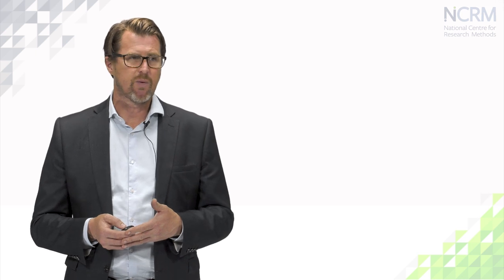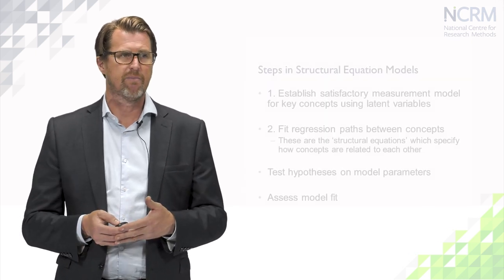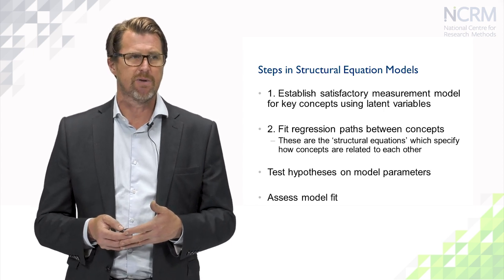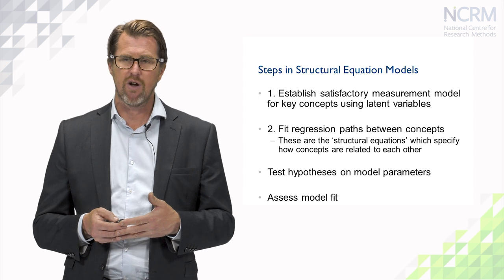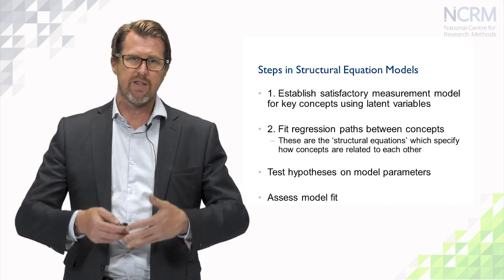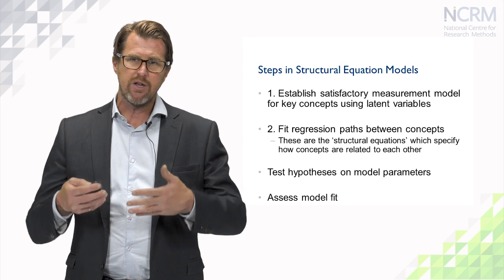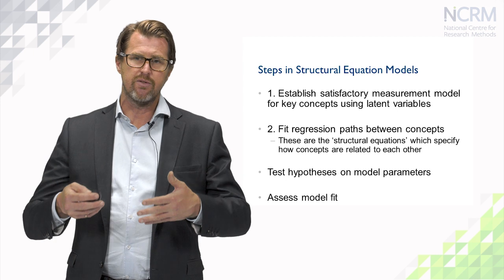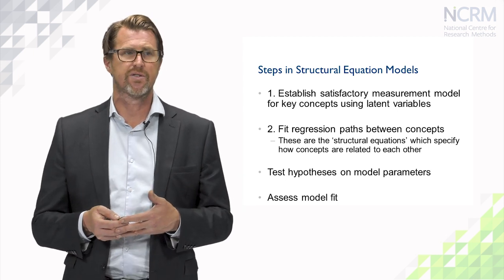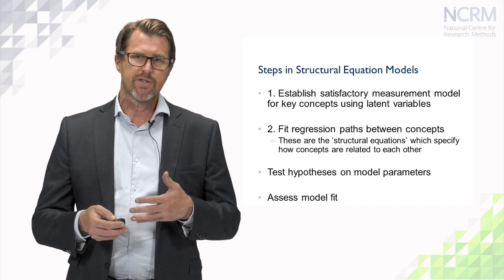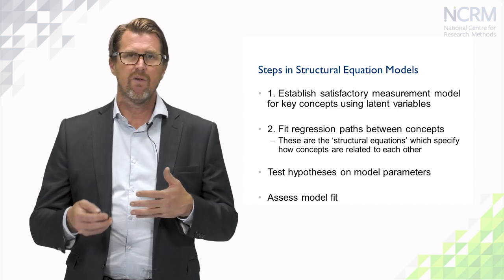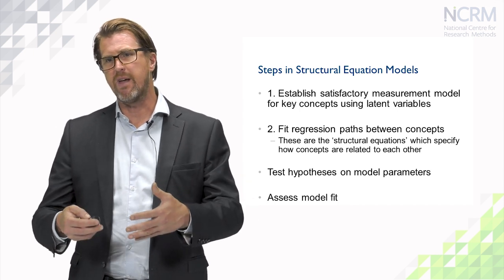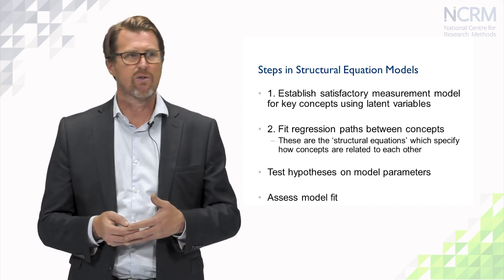The steps in fitting structural equation models — we've already looked at the idea of establishing a satisfactory measurement model in the previous videos. So we have a clear idea of the concepts that form our theoretical model. We use latent variable models, confirmatory factor analysis and so on, to get good measures of those concepts. Now we want to specify how those concepts are related to one another, and this is really the part of the modelling where we are testing our causal theory.